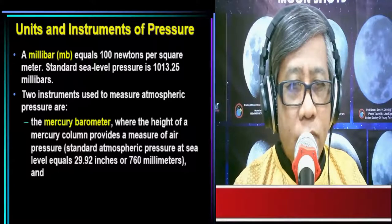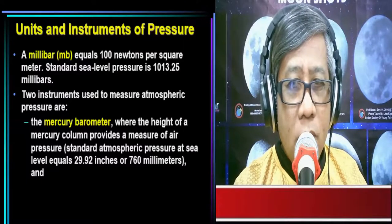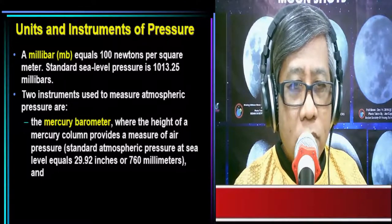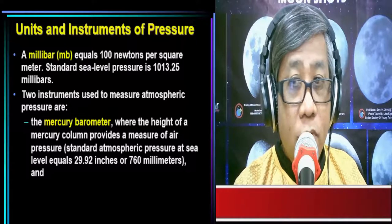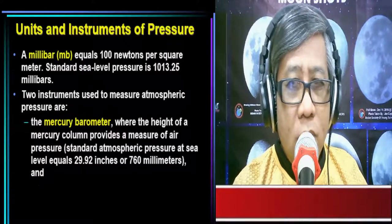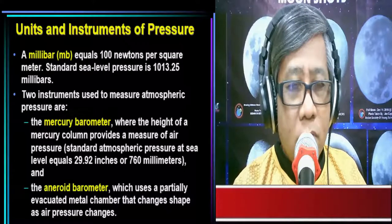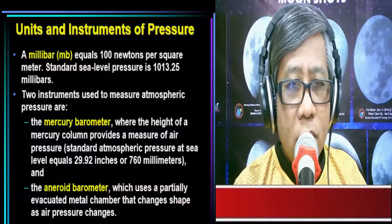There are instruments used to measure atmospheric pressure. First, we have the mercury barometer, where the height of the mercury column provides a measure of air pressure. The standard atmospheric pressure at sea level equals 29.92 inches of mercury, or about 760 millimeters of mercury. We also have the aneroid barometer, which uses a partially evacuated metal chamber that changes shape as air pressure changes.